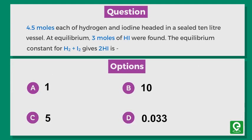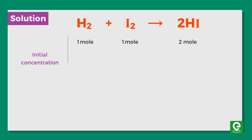Solution: Given the equation H2 plus I2 equals to 2HI, which means that 1 mole of H2 will react with 1 mole of I2 to form 2 moles of HI. Initial concentration of H2 and I2 are given to be 4.5 moles each, initial concentration of HI will be 0.